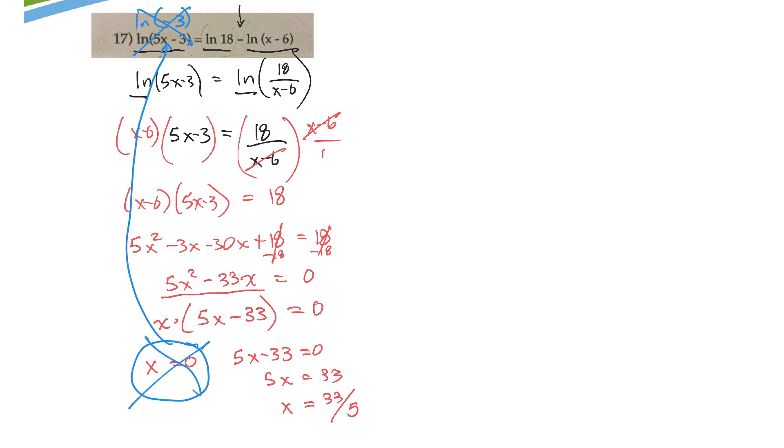But when I put 33 over 5 into them, you can try this on your calculator. Go ln of 5 times 33 over 5 minus 3, that's that first bit. And see if the answer to that is the same as ln of 18 minus the ln of 33 over 5 minus 6. So when you do this and when you do this, you should come up with the same answer. If not, then you'd say no solution. But I think in this case it'll work. Thank you.